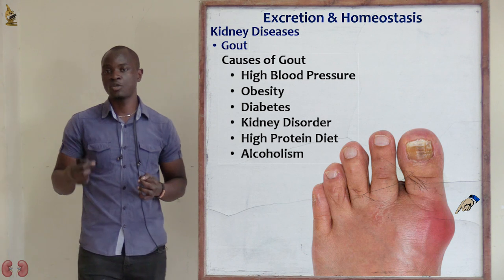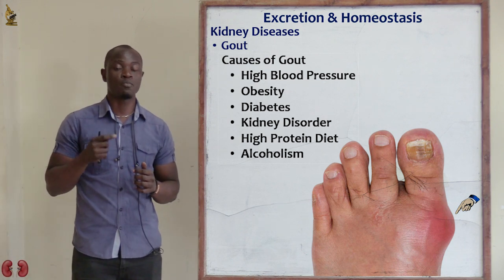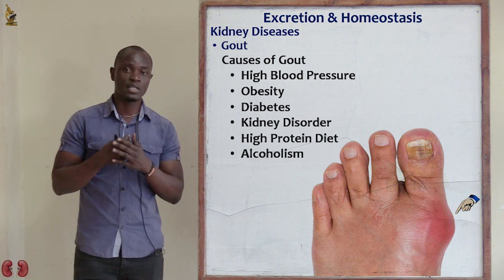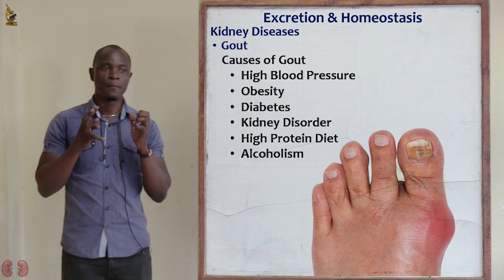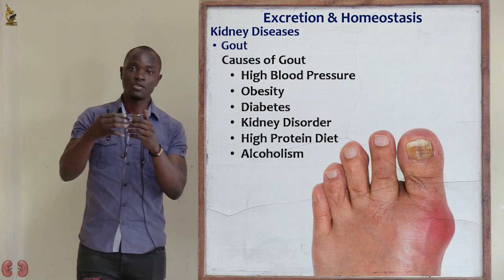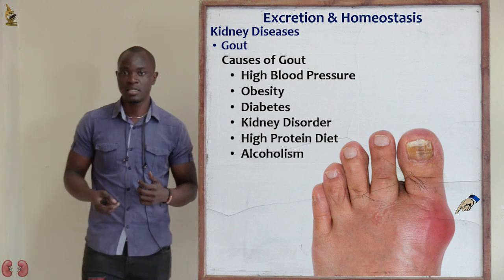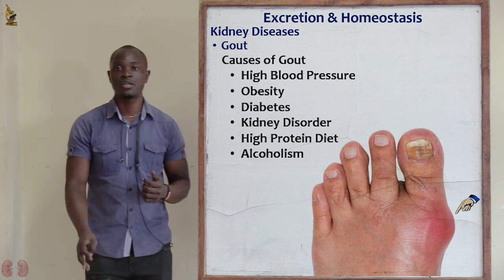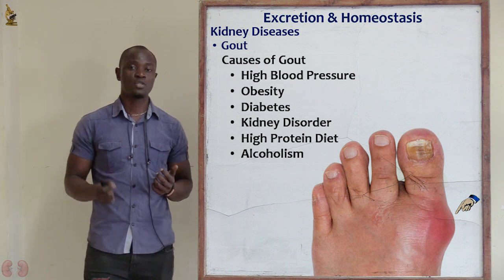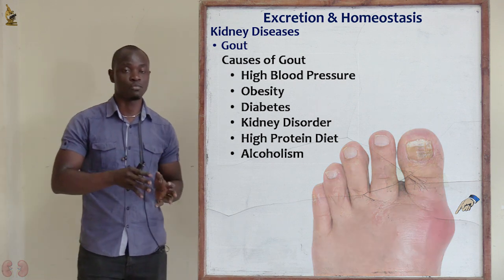Gout is a very bad disease. To eliminate uric acid from the joints is not easy. Gout can make someone unable to perform daily activities. If it enters into the hands, it is very painful to even move them, because uric acid has been deposited on the joints. Gout can also impair movement — if it's deposited on the joints of the knee or toes, the person will not be able to move due to excruciating pain.